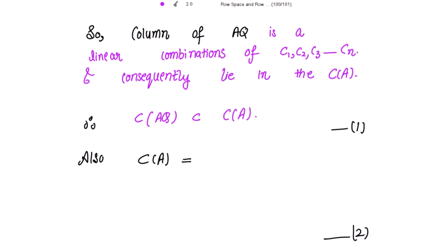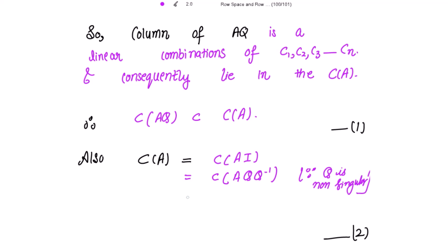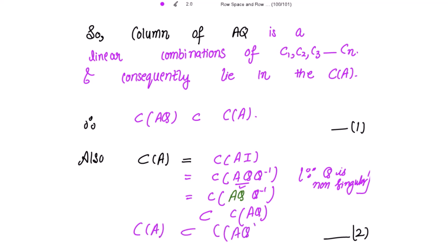Also, the column space of A can be written as the column space of A times I, where I is the identity matrix. Because Q is non-singular, the identity matrix can be written as Q times Q inverse. Taking AQ together and applying the result that the column space of a matrix product is a subset of the column space of the first matrix, we get that the column space of A is a subset of the column space of AQ. Please mark this as 2.